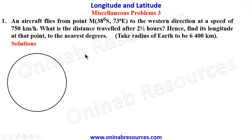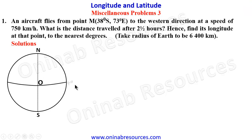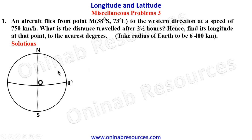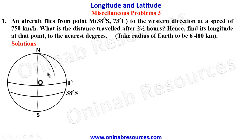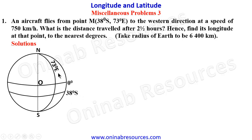In our solution we are going to represent the information diagrammatically. We have the Earth, believed to be spherical, with the North, the South, and the equator. We need to get the latitude 38 degrees South and longitude 73 degrees East. The intersection of latitude 38 degrees South and longitude 73 degrees East gives us point M.